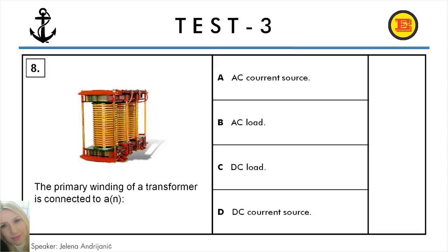Question number 8. The primary winding of a transformer is connected to: A: An AC current source, B: An AC load, C: A DC load, D: A DC current source.